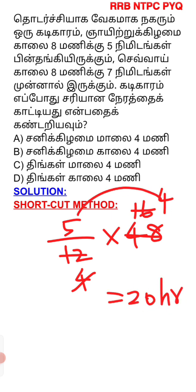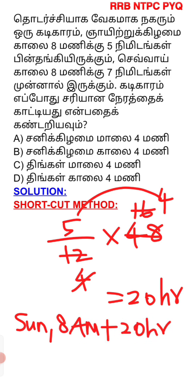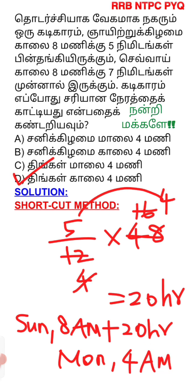So when we start Sunday morning at 8am, we add 20 hours, then subtract, giving us Monday morning at 4am. That's correct — option D is the correct answer.